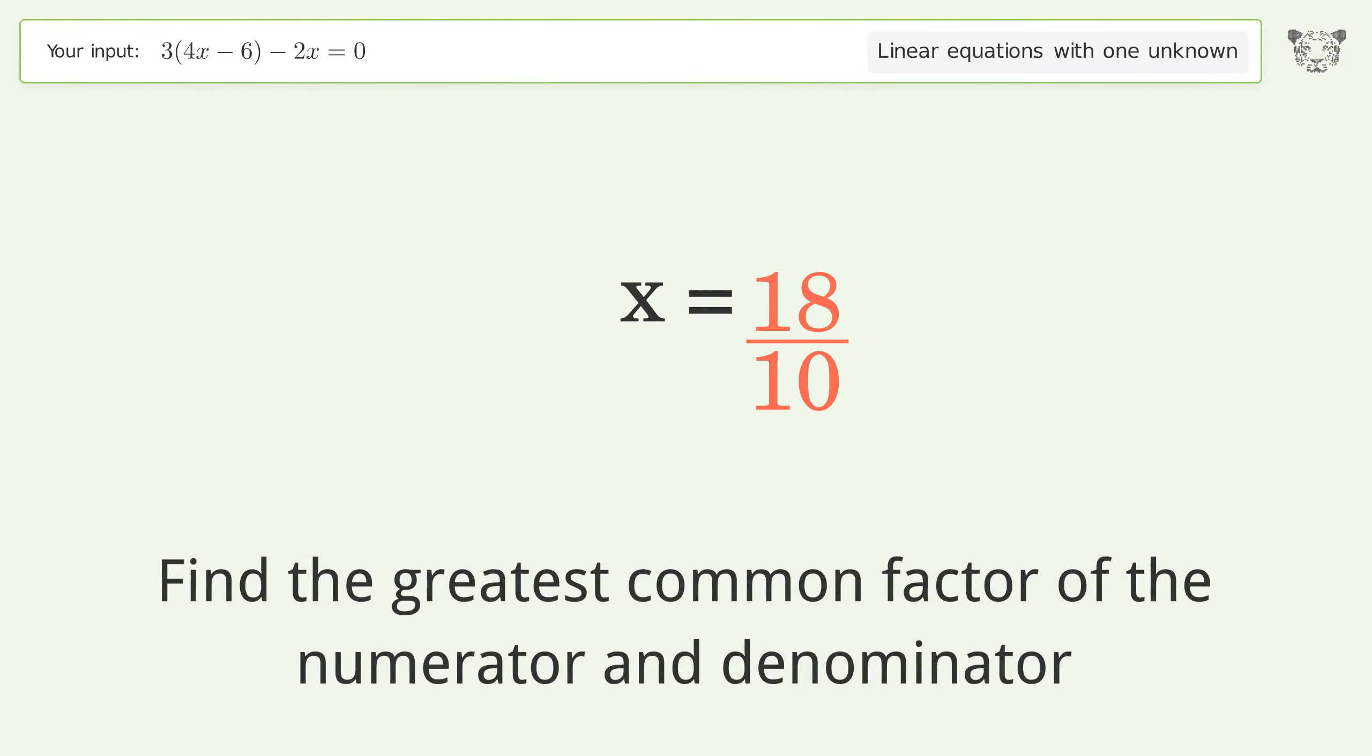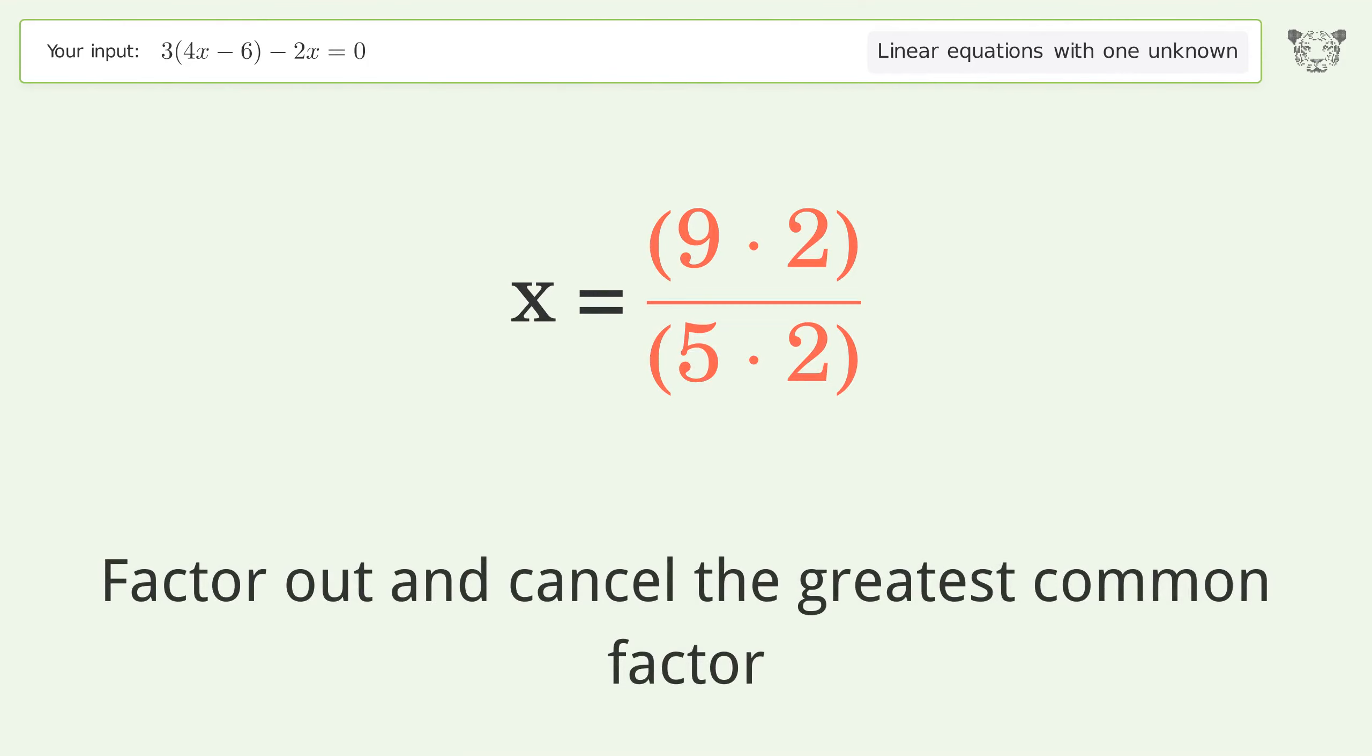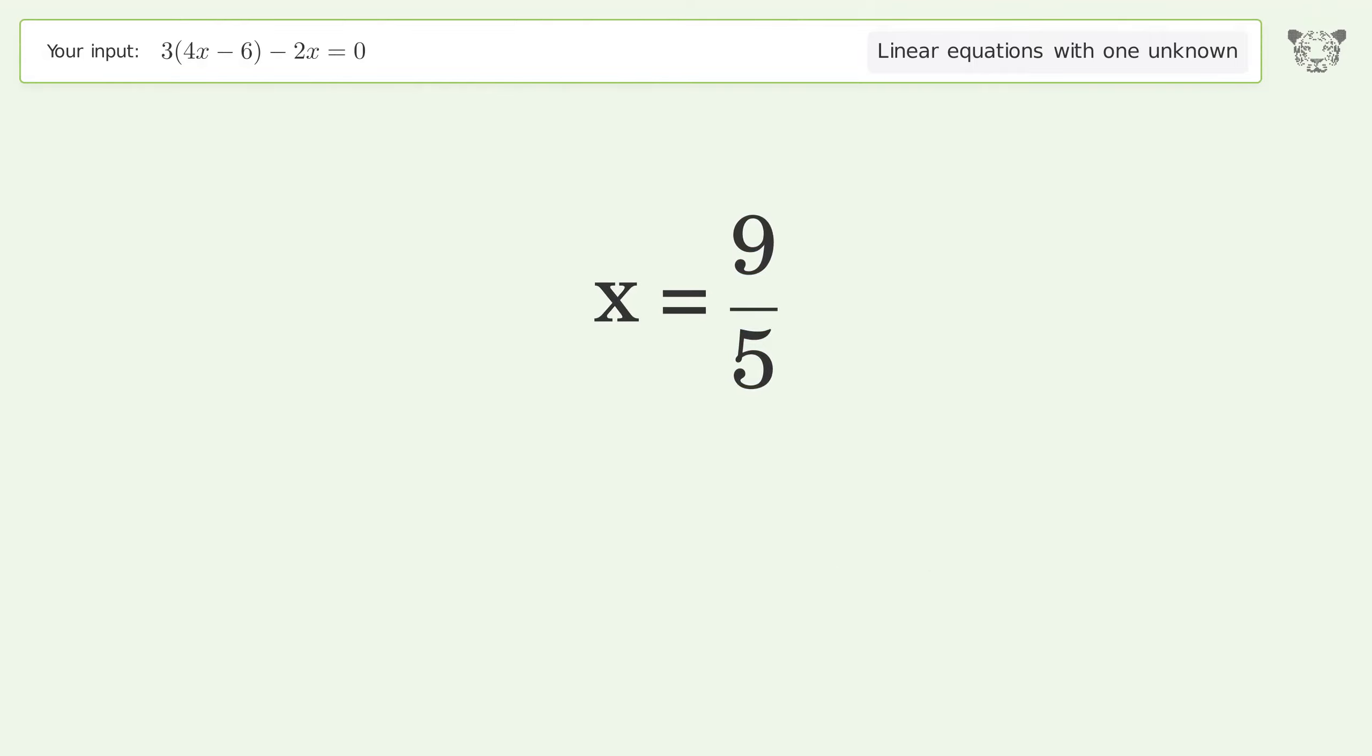Find the greatest common factor of the numerator and denominator. Factor out and cancel the greatest common factor. And so the final result is x equals 9 over 5.